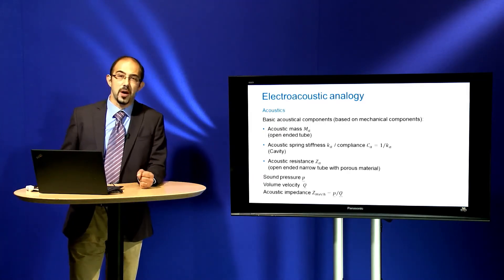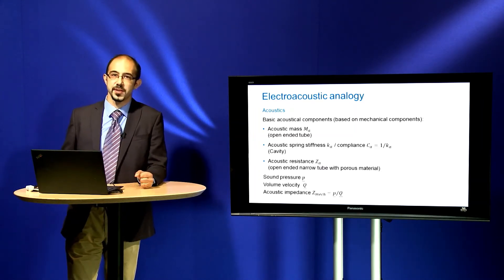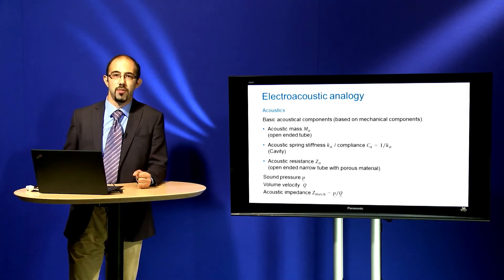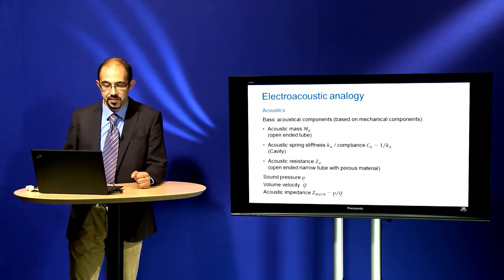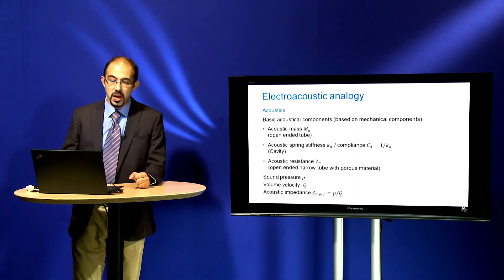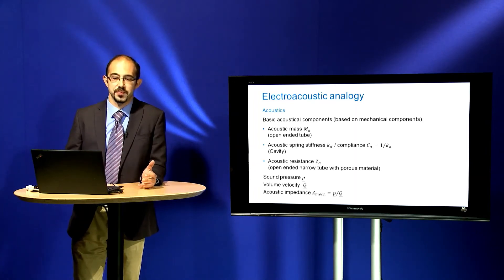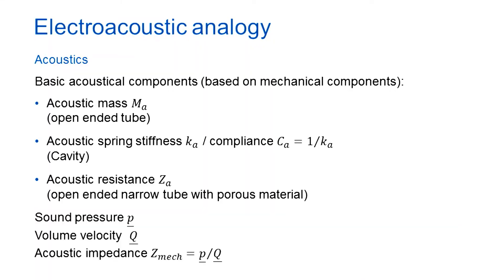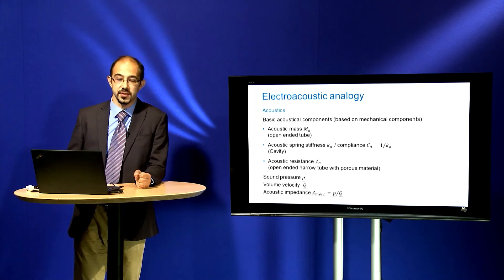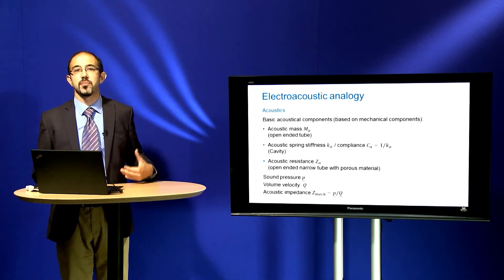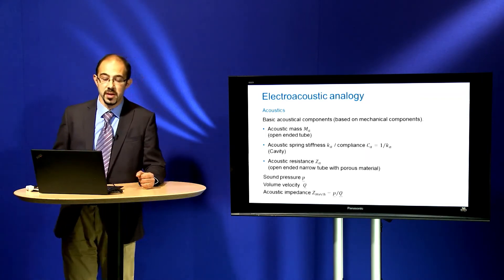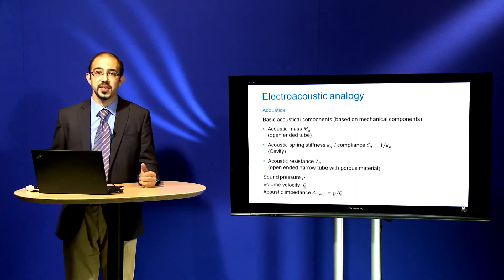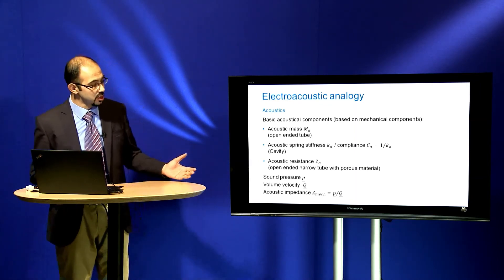Now I would like to talk about electroacoustic analogy. If we talk about acoustical systems, it means we are talking about physical elements such as pipes, orifices or diaphragms. Again, we have three basic acoustical elements: acoustical mass, acoustical spring — which can be defined using stiffness or compliance, meaning cavity — and acoustic resistance. The field variables are sound pressure and volume velocity, which is directly dependent on the sound velocity using the area. The acoustical impedance can be defined as the ratio between the sound pressure and the volume velocity.